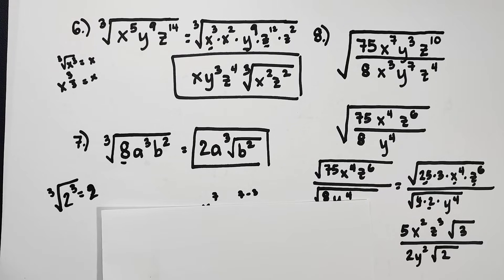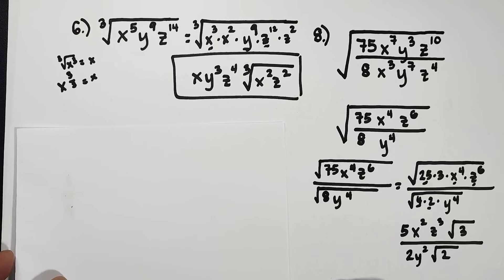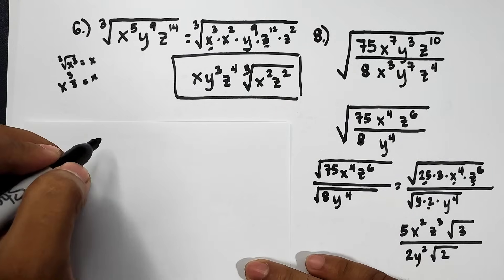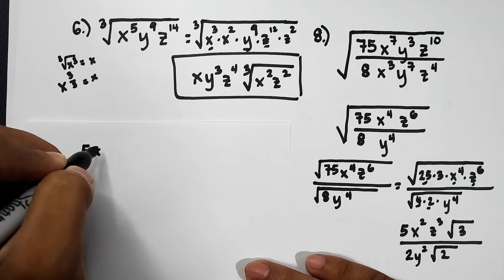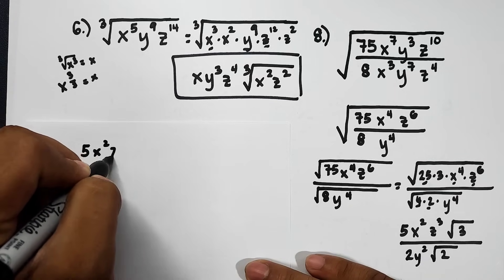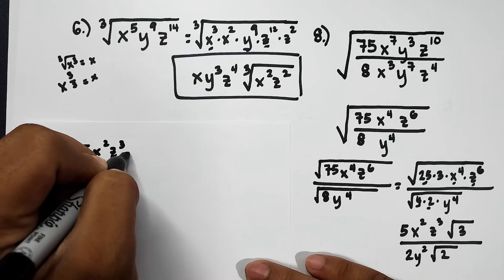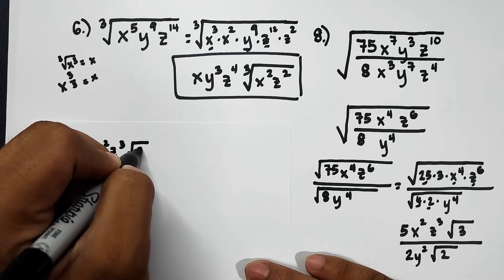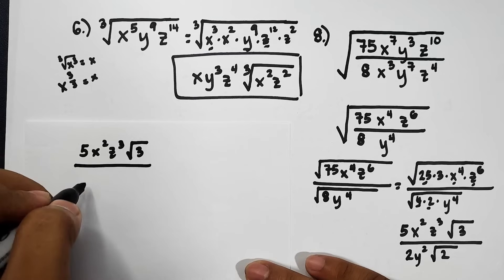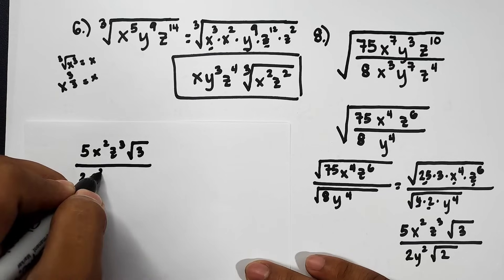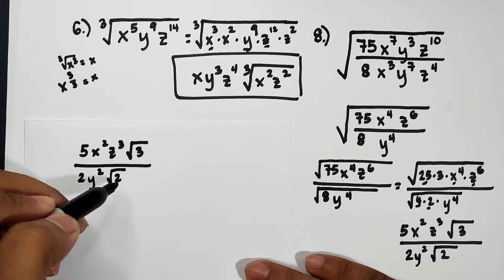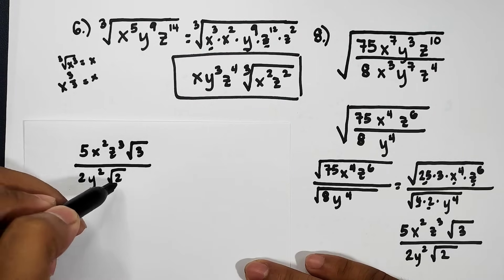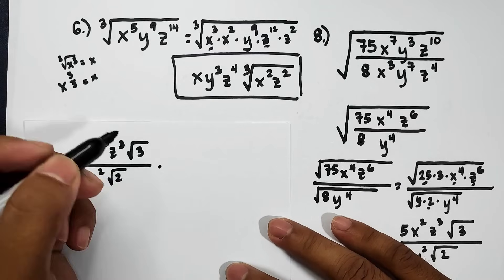For rationalization, the concept is to eliminate the radical in the denominator. We multiply both numerator and denominator by the square root of 2. So we have 5x²z³ times square root of 3 over 2y² times square root of 2, multiplied by square root of 2 over square root of 2.